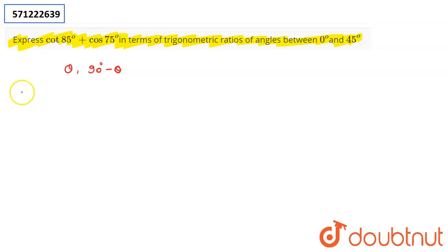The first part is cot. For cot, I know that cot of 90° minus θ is equal to tan θ.